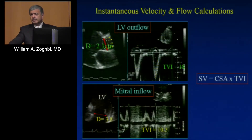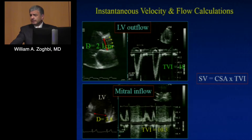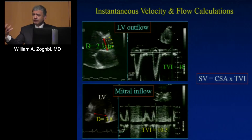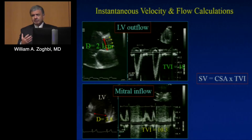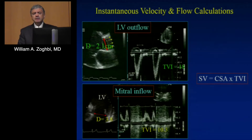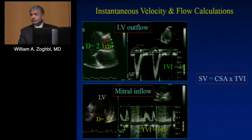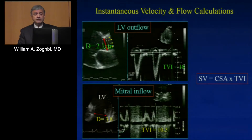Combining Doppler with echocardiographic measurements, you can calculate cardiac output, systemic output, regurgitant volume, and regurgitant fraction. That's also how you calculate valve area, because valve area has a component of flow and a component of gradient — the velocity through the valve. You can calculate output at the annulus of the aortic valve, at the annulus of the mitral valve, and understand what flows are.